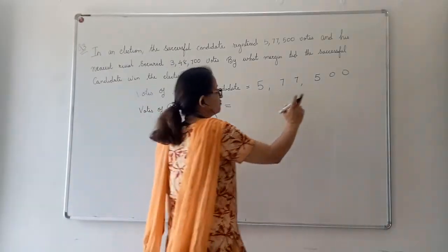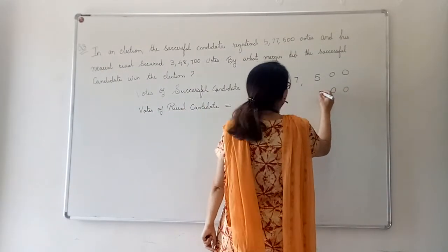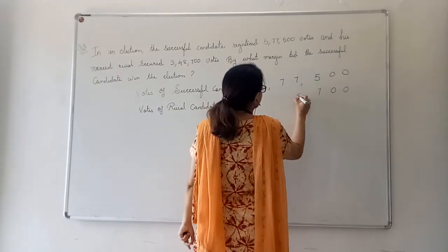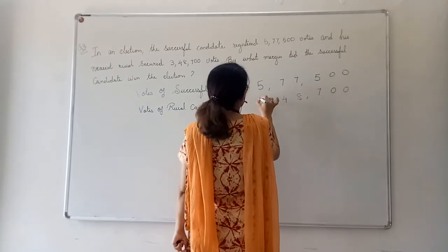So, we will write from back itself. Ones, tens, 100 is 7, then 1000 is 8, 4. Ones, tens, tens, 100,000. And, lakhs is 3.